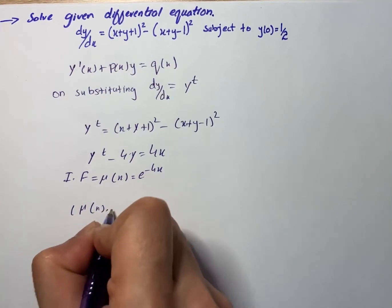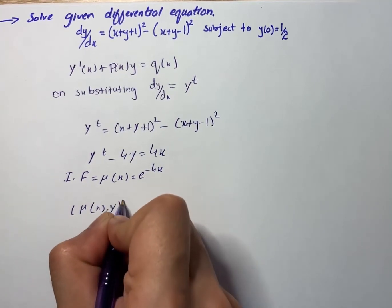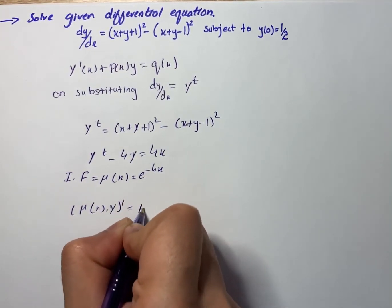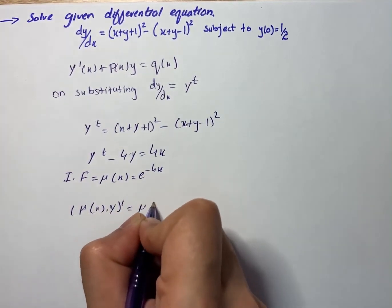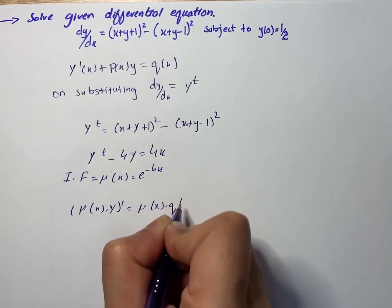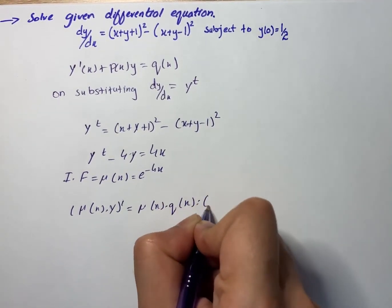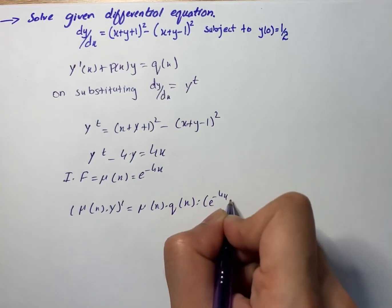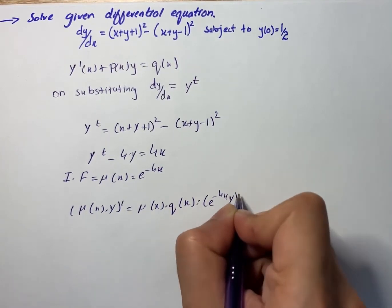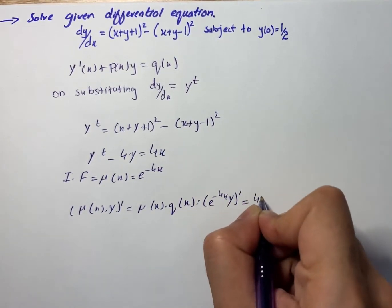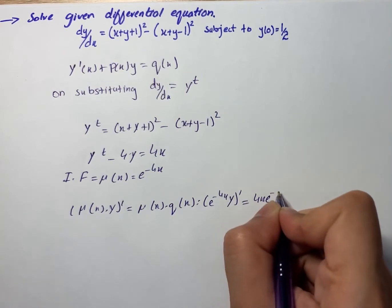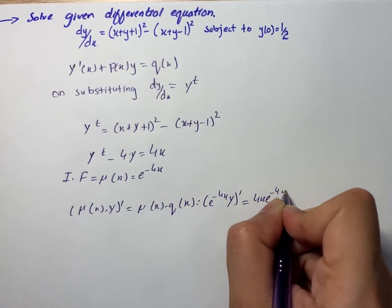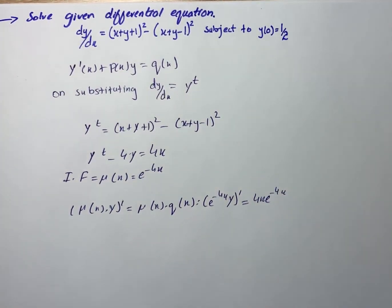We write the equation in the form I(x) times y' with the constant Q(x), giving e raised to power minus 4x times y whole prime, and simplifying the terms with e raised to power minus 4x.